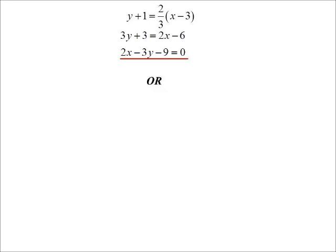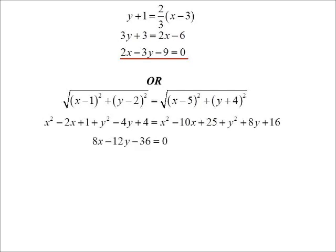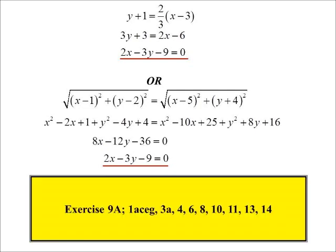Of course, the other way I could do it again is just using the distance formula. We're saying the distance from the point one, two is the same as the distance to the point five, negative four. Square both sides, collect like terms, four goes into everything there and we come up with the same line. So either way, however you want to think about that one, but we come up with the same answer. So let's start off with our look at locus, locus, however you say that word.